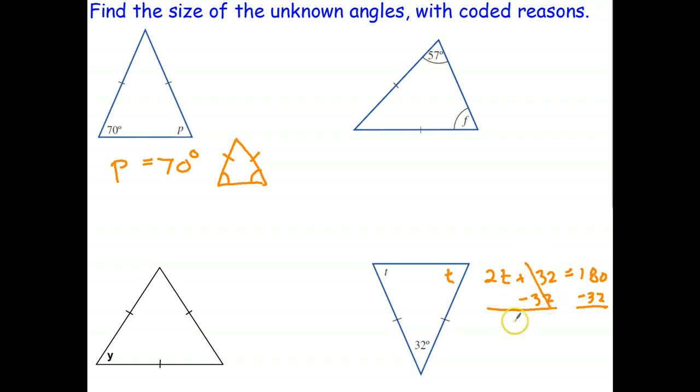Okay, 2T equals 180 minus 30 is 150. Take away another 2, 148. Divide both sides by 2. And T equals 74 degrees.